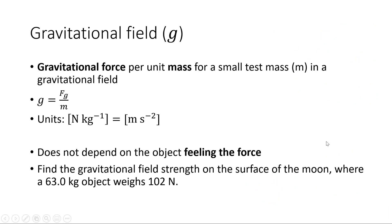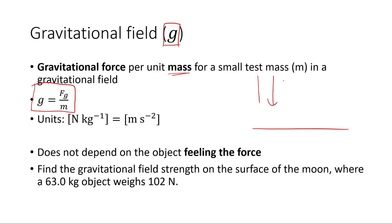Let's define our gravitational field. We use the variable lowercase g for gravitational field — it is a vector. It's defined as gravitational force per unit mass for a small test mass, which we usually call little m, in a gravitational field. So our equation is: little g equals the force of gravity over little m. Since we have force over mass, our units are going to be newtons per kilogram.